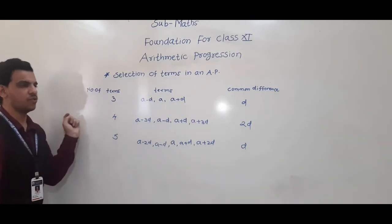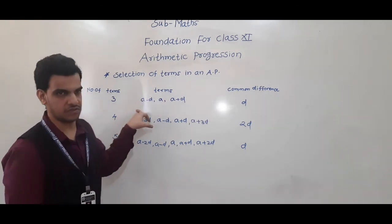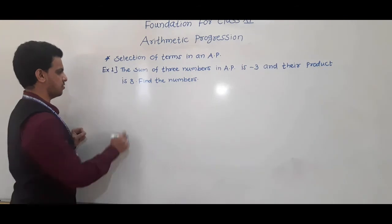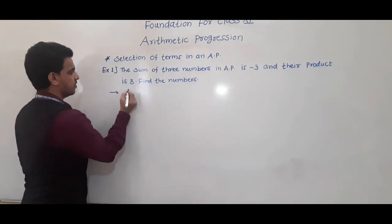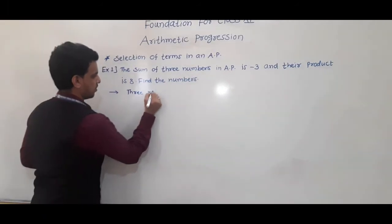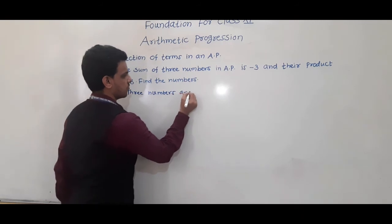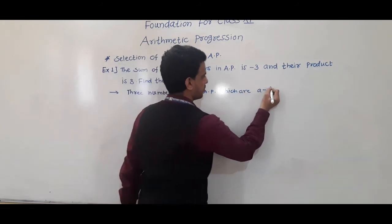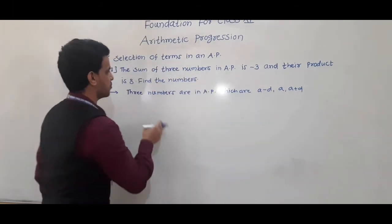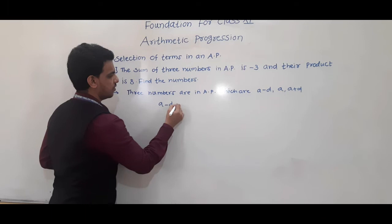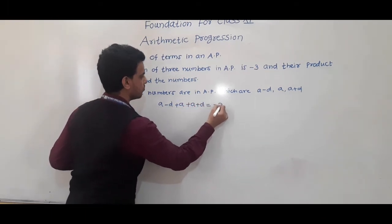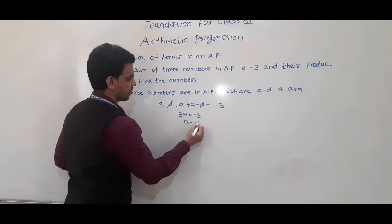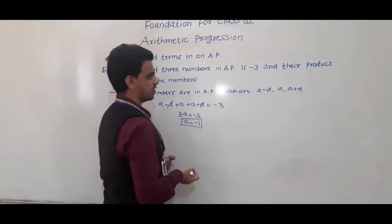First example: The sum of 3 numbers in AP is −3 and their product is 8. Find the numbers. The 3 numbers in AP are a − d, a, a + d. Given sum is −3: (a − d) + a + (a + d) = −3. The d terms cancel, so 3a = −3, giving a = −1.